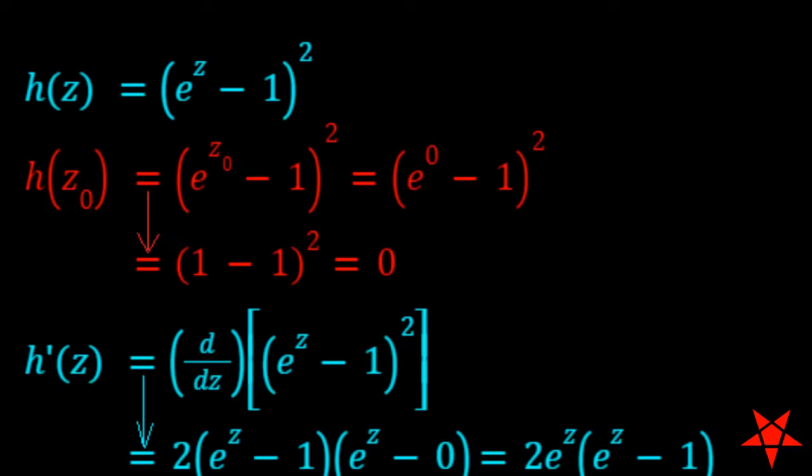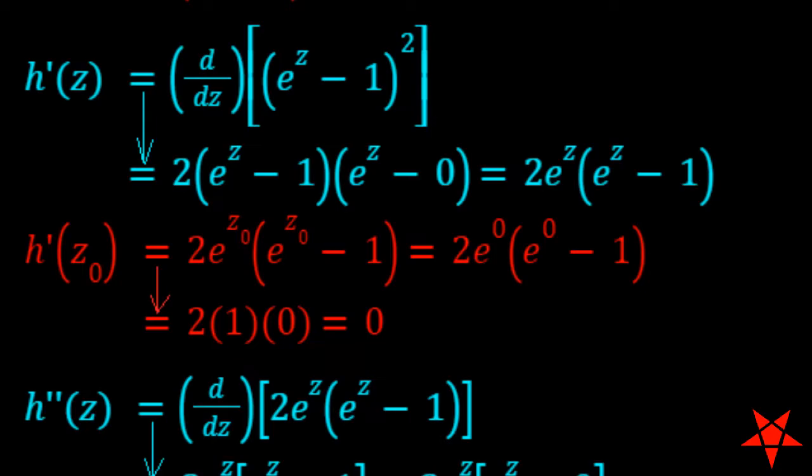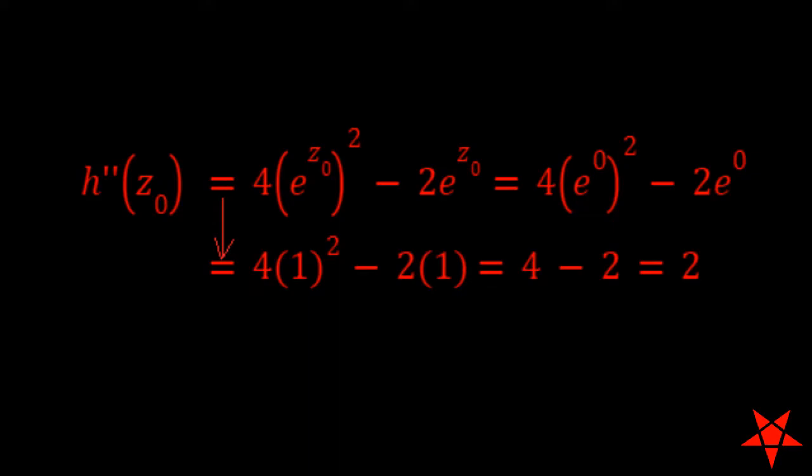Then we take some derivatives of h of z, and after evaluating them at z0, we see that the lowest order derivative with a nonzero value is that of h double prime, which equals 2.